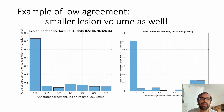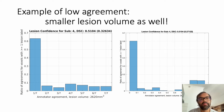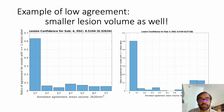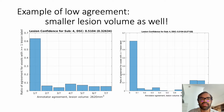Here's an example of low agreement between the seven annotators. In the histogram on the left we use the unweighted — treating all seven annotators equally — histogram values, and you see the computed lesion confidence is 0.32. On the right you see the weighted histogram and the lesion confidence in this case is a little lower at 0.27. The dice score of the model run on this subject with the ground truth is 0.51.